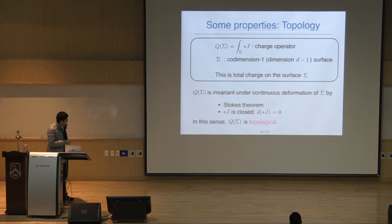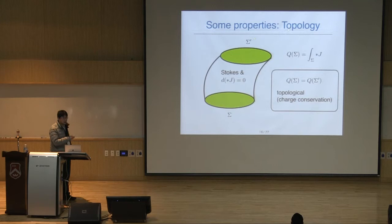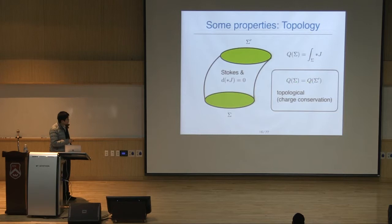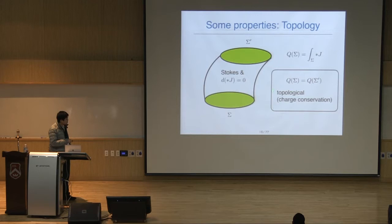The proof is simple: we take two surfaces σ and σ′, take a subspace whose boundary is given by σ′ and σ, apply Stokes' theorem and the fact that the current is closed, and conclude Q(σ) = Q(σ′). So the dependence on the surface is topological — we can continuously deform the surface — and this physically corresponds to charge conservation.